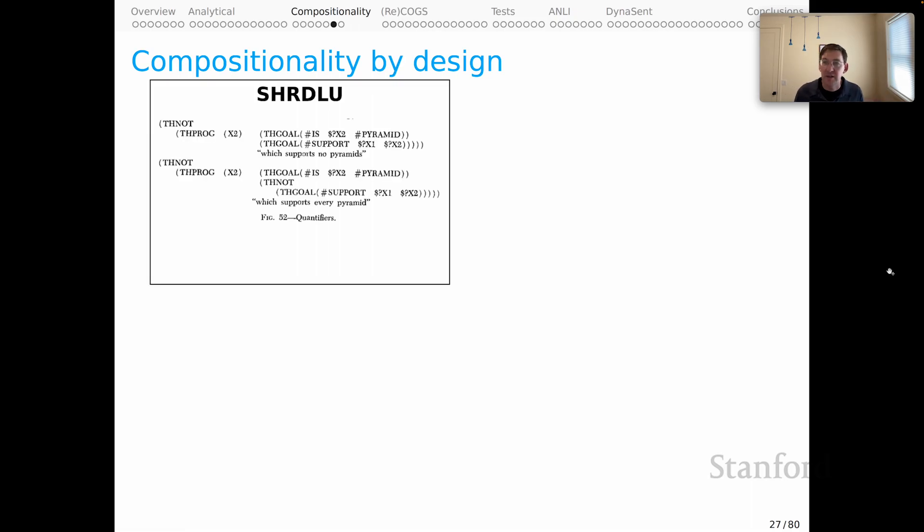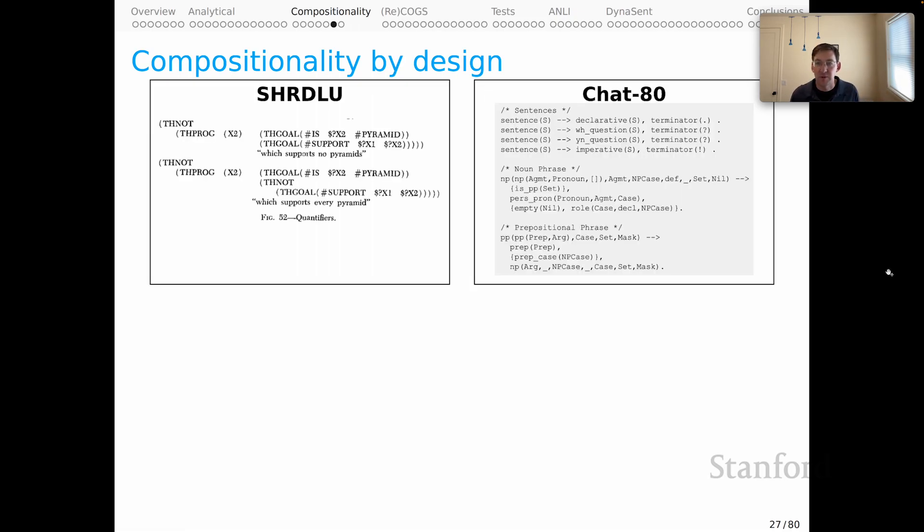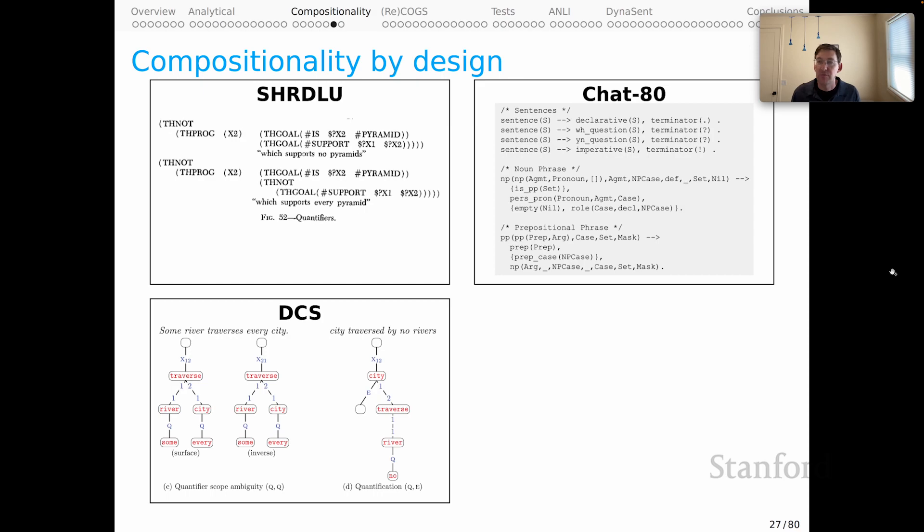It's interesting to reflect on the compositionality principle in the context of the history of AI models. In the earliest eras of AI, like the Shirdloo system or the Chat80 system that we saw on the first day, we got kind of compositionality by design because those were implemented grammars, symbolic grammars, that themselves adhered to the compositionality principle. So we didn't wonder about whether these NLU models were compositional because we kind of presupposed that they would be.